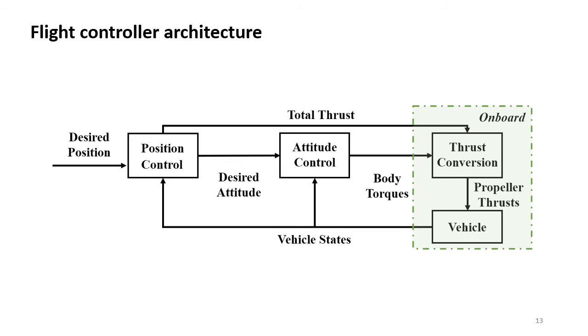This cascaded structure can be decoupled into two separate parts, an off-board controller for position and attitude control, and an on-board controller for thrust conversion.